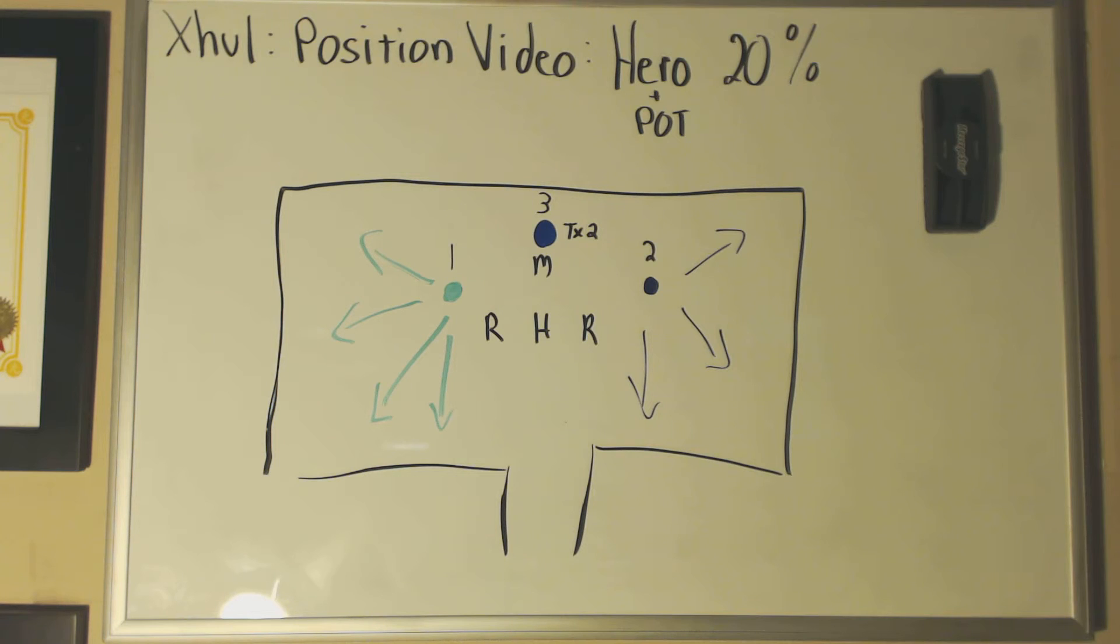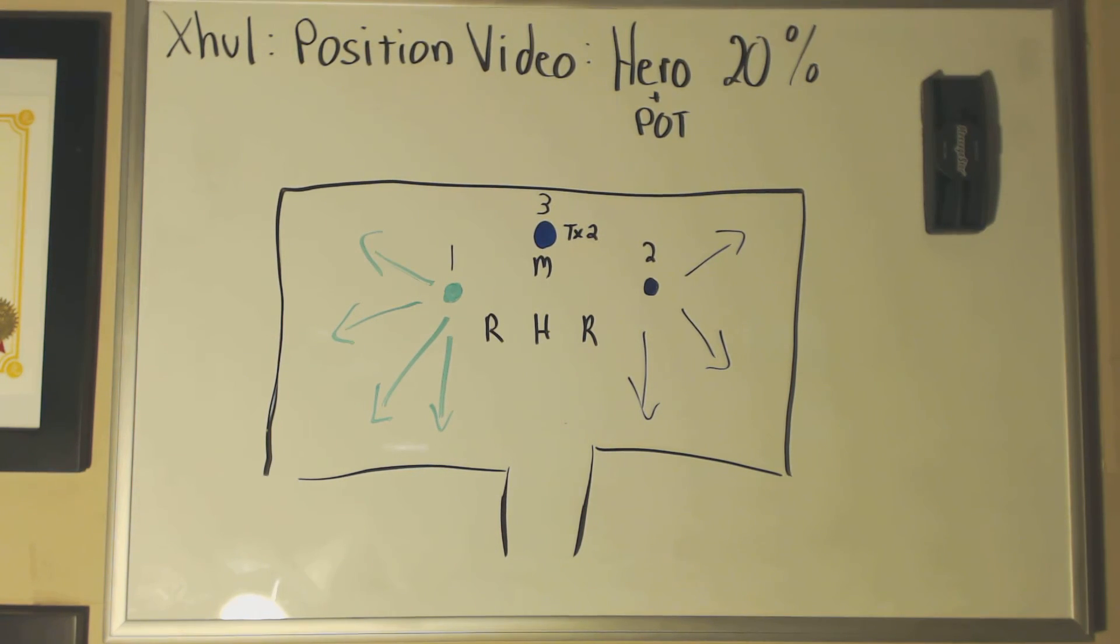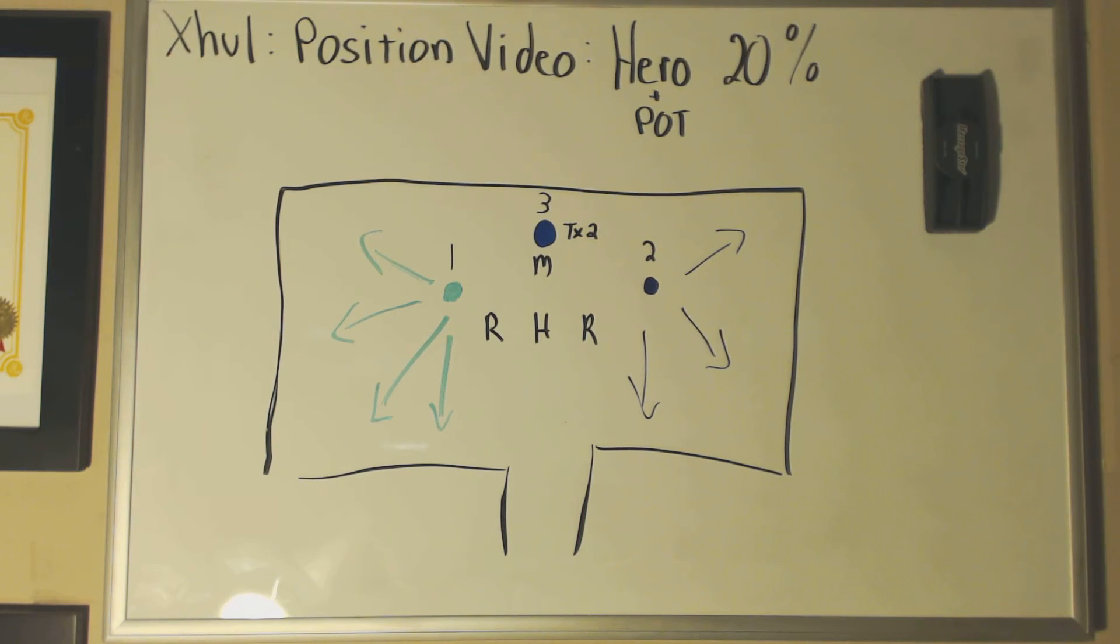Once we get through with position two, then we move to position three. At this point, the tanks need to stack, and then basically do a taunt rotation as they go through. The idea here is fell strike, void strike, so one tank will take fell strike, then the next tank will take void strike, then the next fell strike, and then void strike. And it alternates like that through the end.